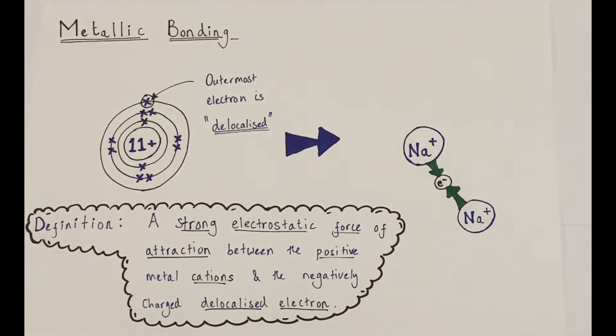This will mean that throughout the sodium metal structure, there will be many sodium positive cations being attracted towards these negatively charged delocalized electrons that are surrounding them or between these cations. So here is my image of a sodium atom with its outermost electron.